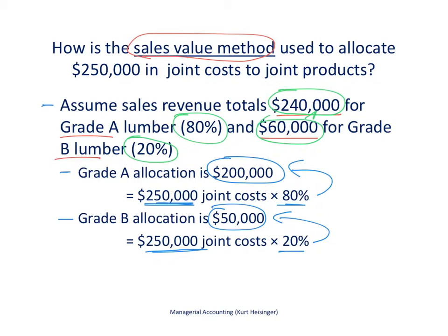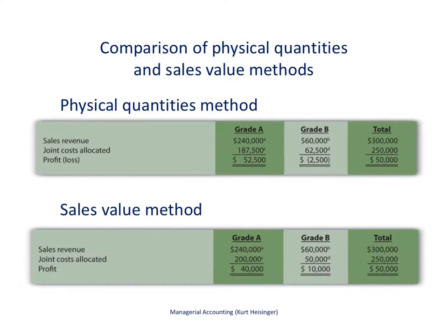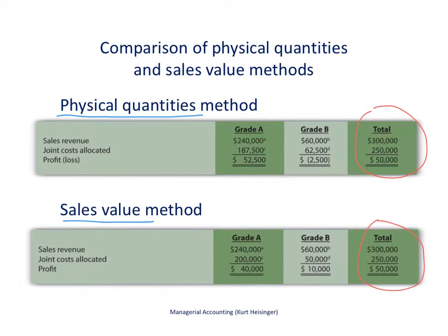We're going to compare both methods on the next slide. What you see here is a comparison of the physical quantities method with the sales value method. Looking at the total columns, they are identical for each approach — revenue, joint costs, and profit. Our revenue is $300,000 regardless of how we allocate joint costs, total joint costs will be $250,000, and in total we'll have profit of $50,000.